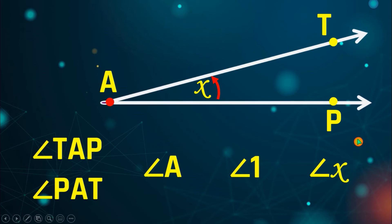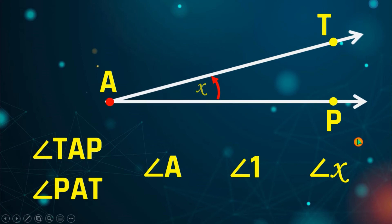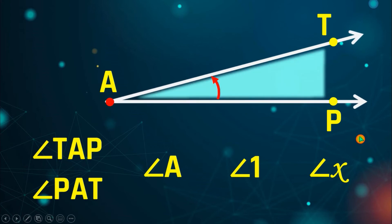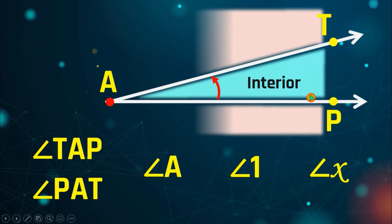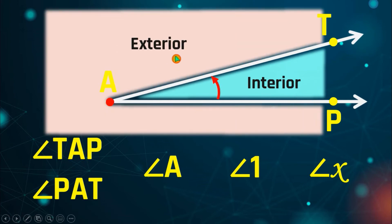The region inside the angle is called the interior part, and the region outside is called the exterior part. It is very important to identify where the interior and exterior are because we are going to use this in our next lesson.